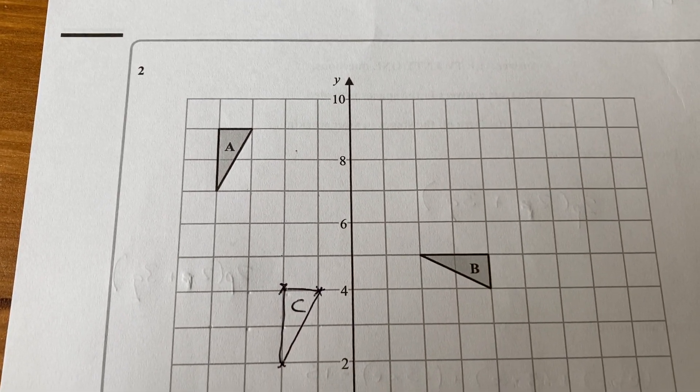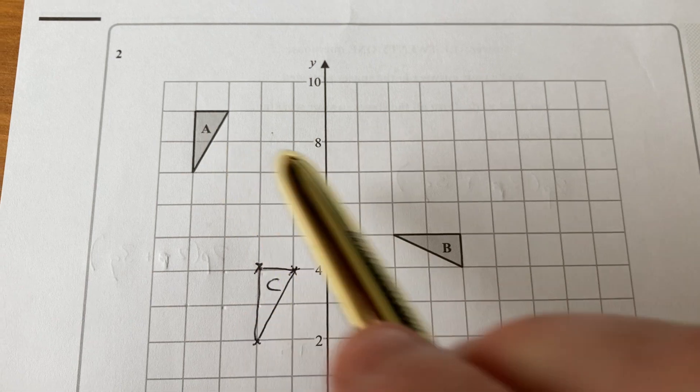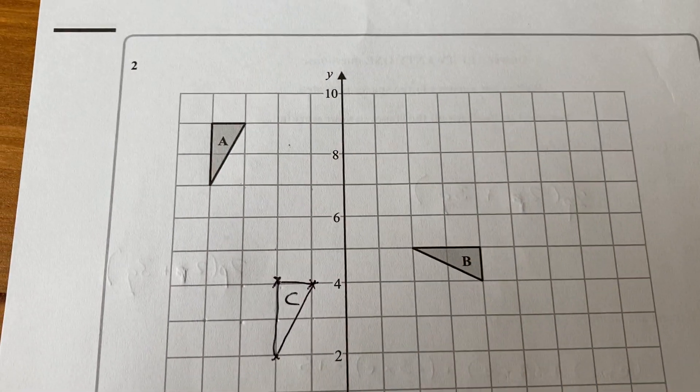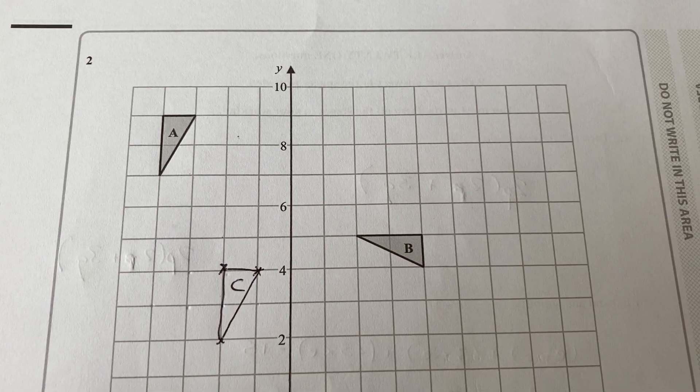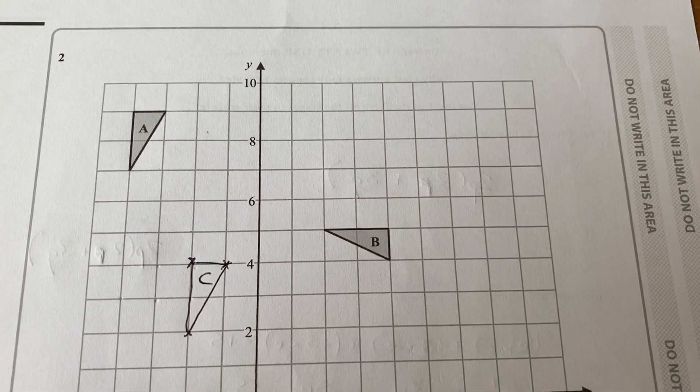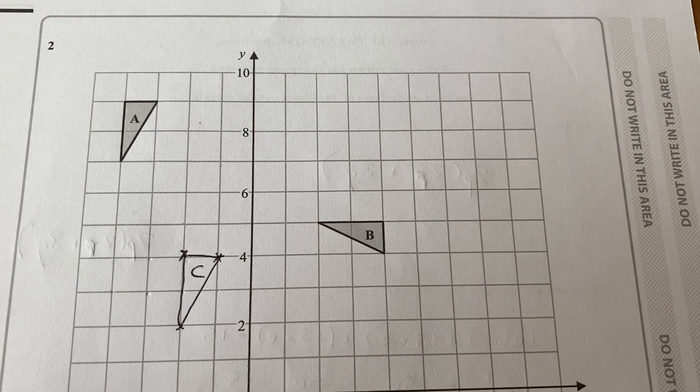Okay, question number two: describe fully the transformation from A to C. Hopefully we can see that it is a rotation of 90 degrees clockwise. What we need to do is find out the rotation point, the center.